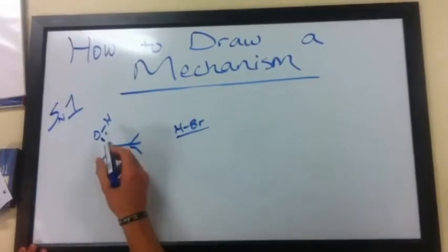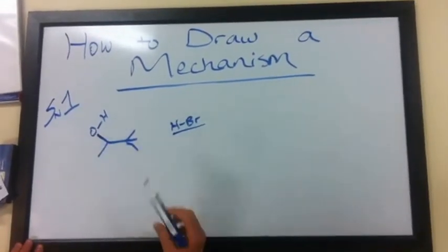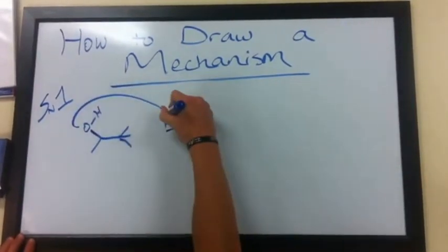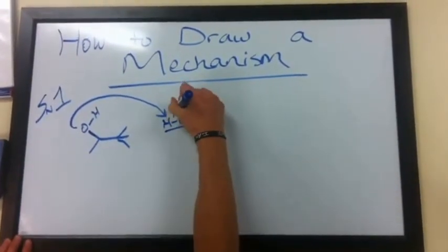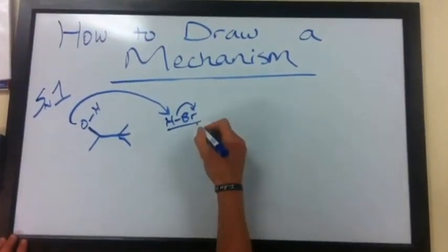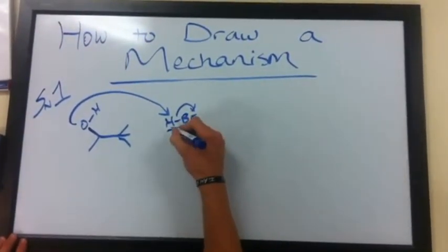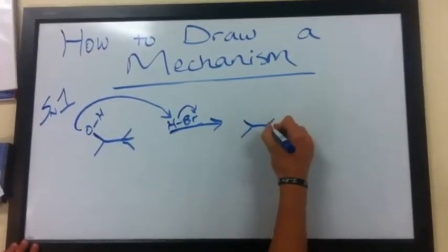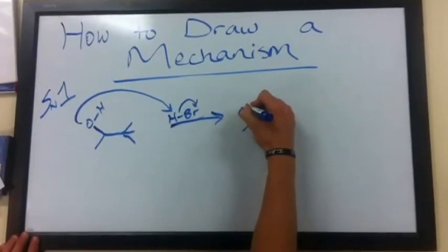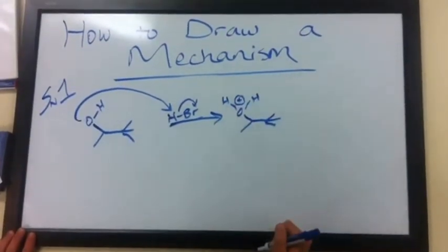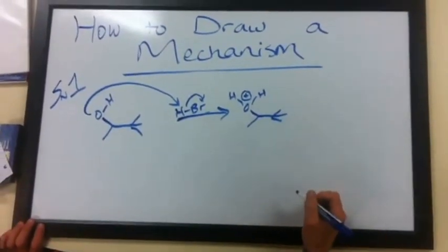In order to do that, the hydroxide group needs to be protonated to make it a better leaving group. To do this, the oxygen will take the hydrogen away from the atom and the remaining electrons will be transferred to the bromine atom, eventually making this alkane with an attached positive water molecule, making it a very good leaving group.